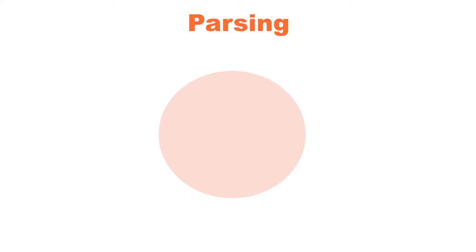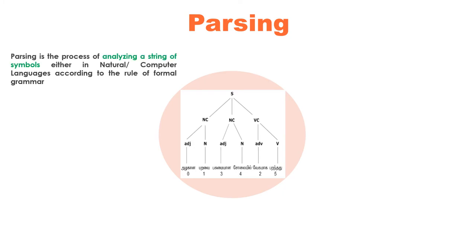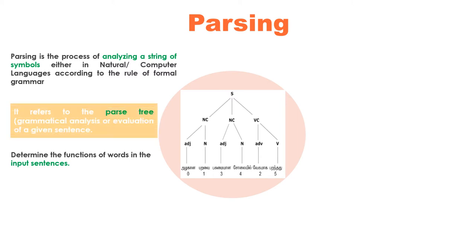Parsing is the process of analyzing a string of symbols, either in natural language or computer languages, according to the rules of formal grammar. The grammar for natural language is ambiguous and allows multiple possible analyses. Getting an efficient and unambiguous parser of natural language has been a subject of wide interest in artificial intelligence over the past 50 years.